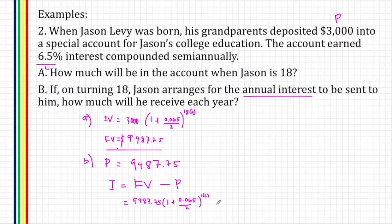So that is 1 times 2 minus the principal, which is $9,487.75.